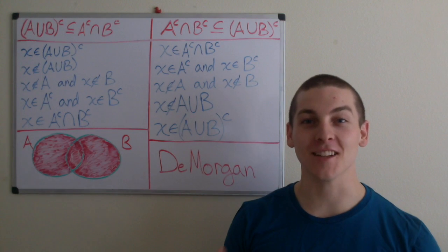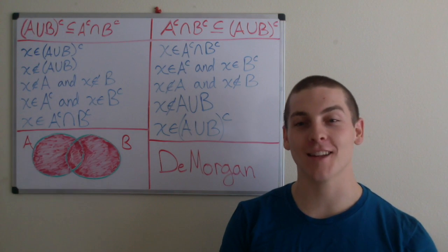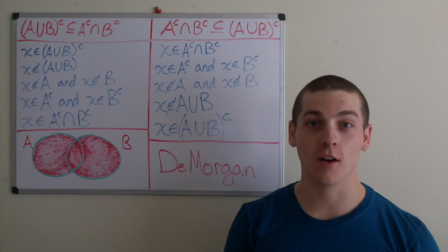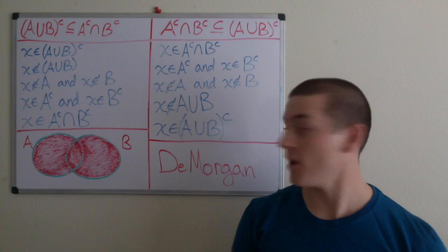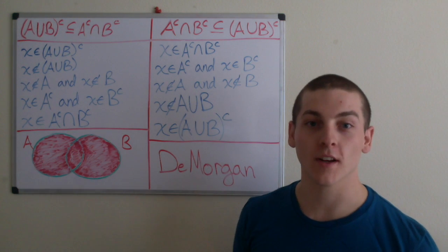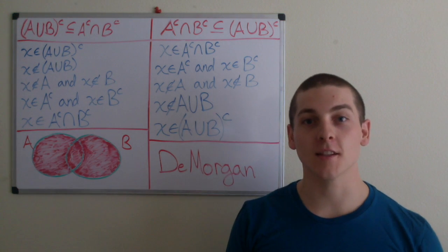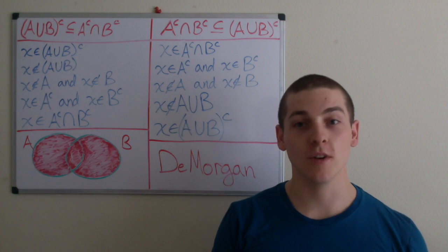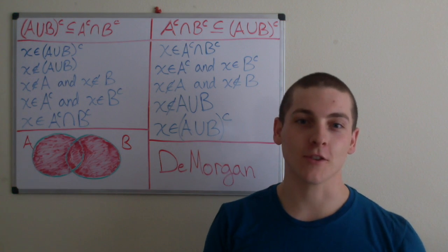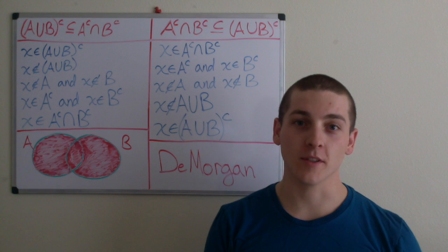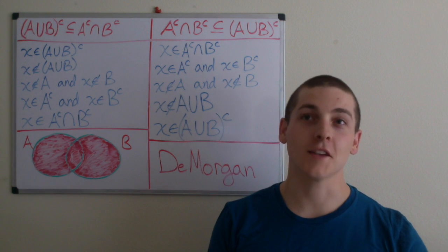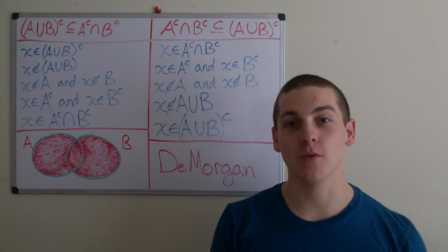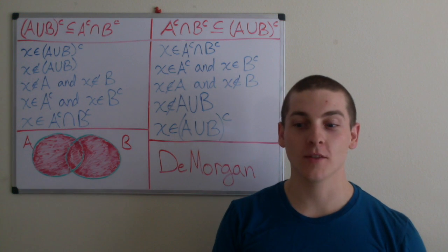In this video, I'll be introducing the very last Algebraic Law of Sets, known as De Morgan's Law. De Morgan's Law was founded by Augustus De Morgan, and it states that the complement of a union is the intersection of the complements. Or, it says that the complement of the intersection is the union of the complements.